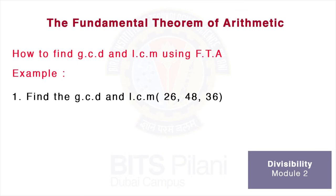The first thing we do is write 26 as a product of prime powers: 2 × 13. We write 48 as 2⁴ × 3, and we write 36 as 2² × 3².